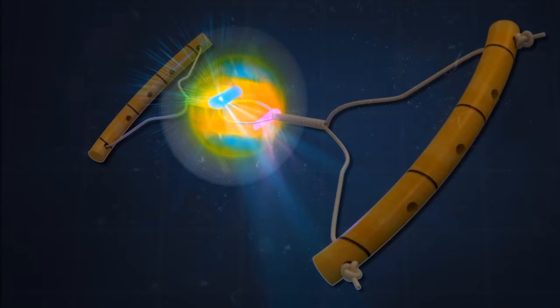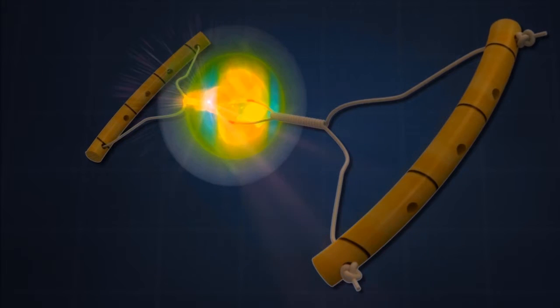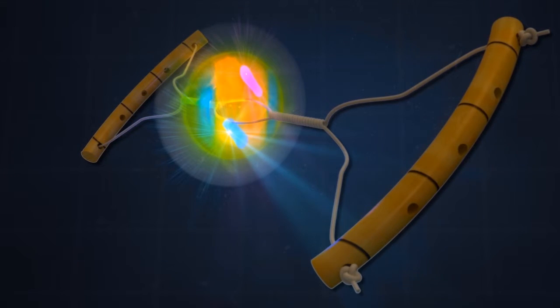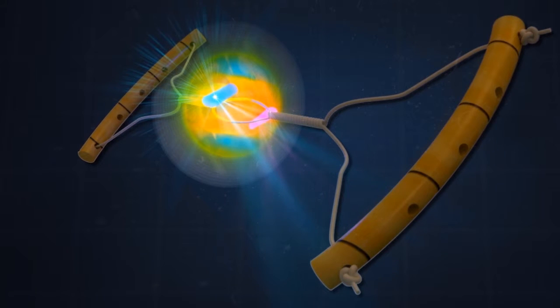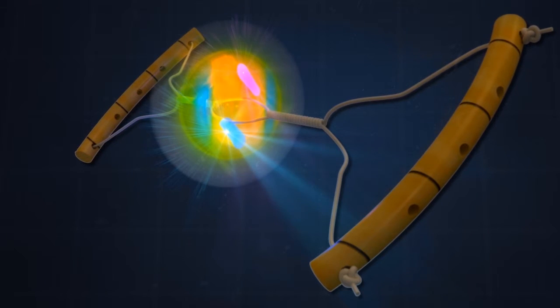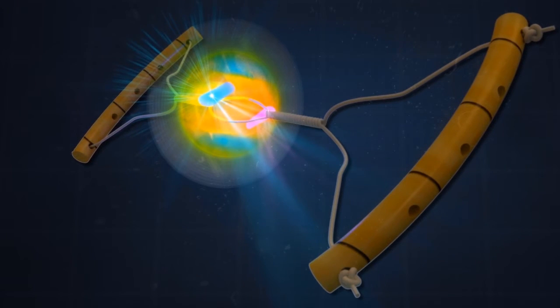A user then holds one end of each loop in each hand and spins the disc to wind it up about the string. When completely wound, the user pulls each end of the loop to force the disc to unwind, causing the disc to spin rapidly.